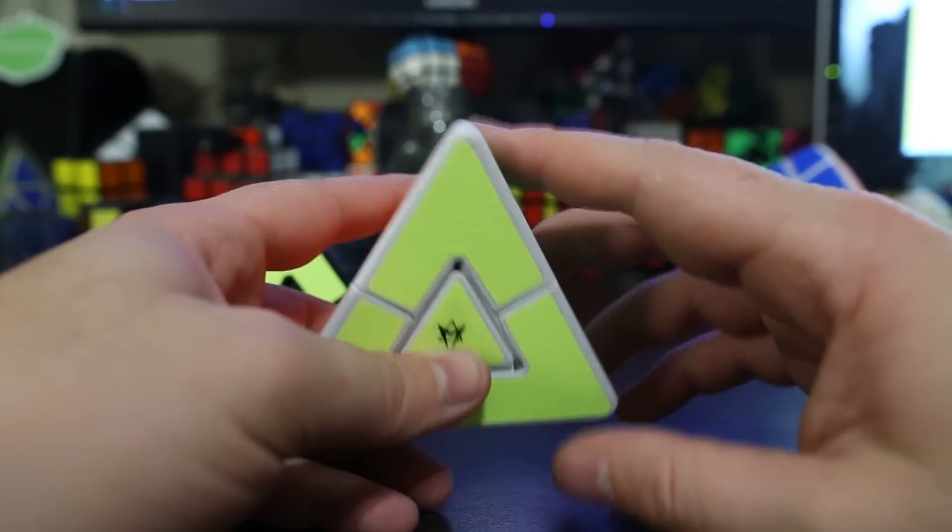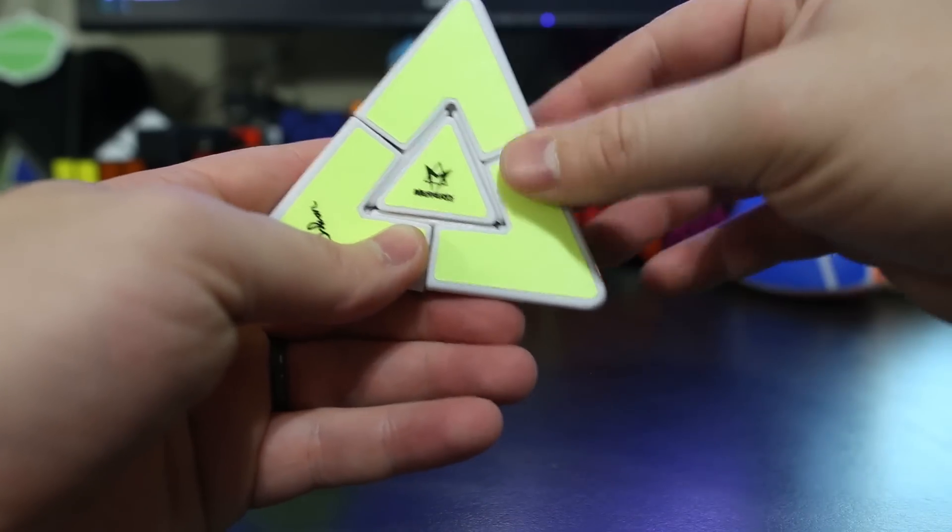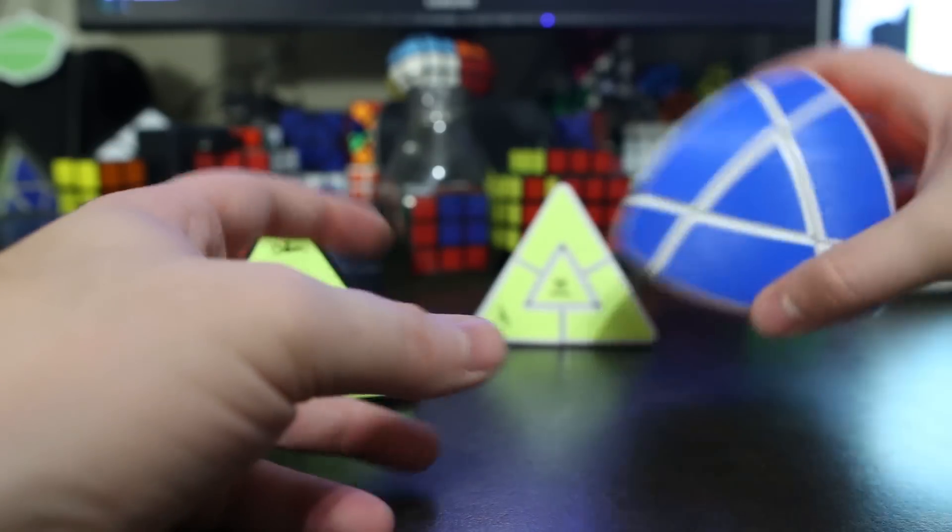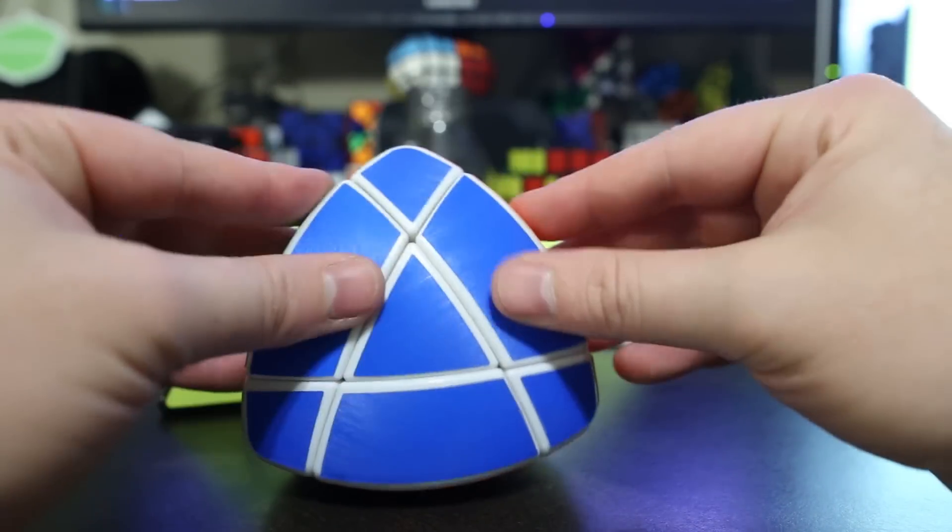This puzzle, what it really is, is it's just a Jing's Pyramid that has no edges. The edges are kind of underneath right here, they're kind of hidden. So if you think of it like this, if this piece didn't have these edges, then this puzzle would be the same as this one.